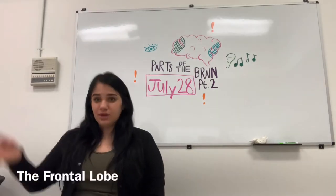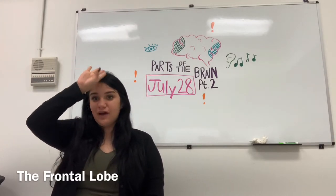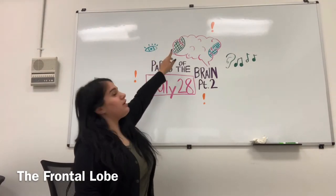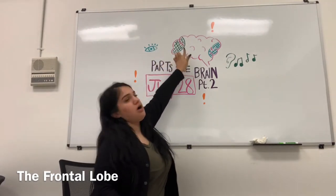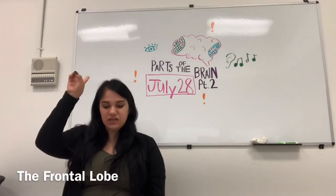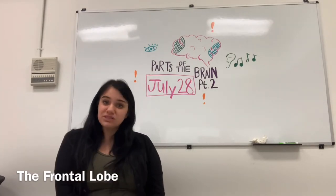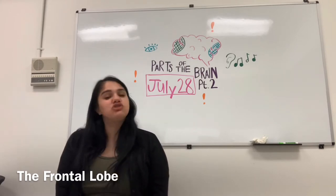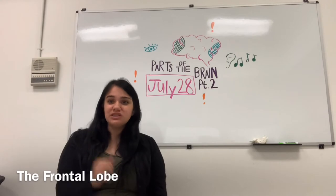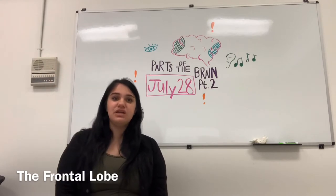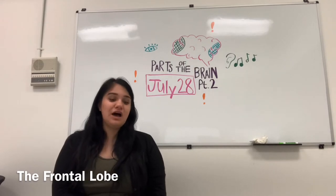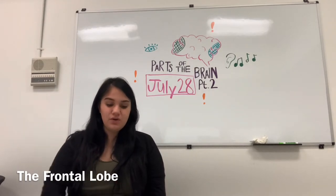Starting with the frontal lobe, the frontal lobe is located right here behind our forehead and is divided into two sections. The frontal lobe is responsible for intentional movements — this doesn't include reflexes. For example, if somebody hits your knee and your knee kicks, that's a reflex — not a voluntary or intentional movement.